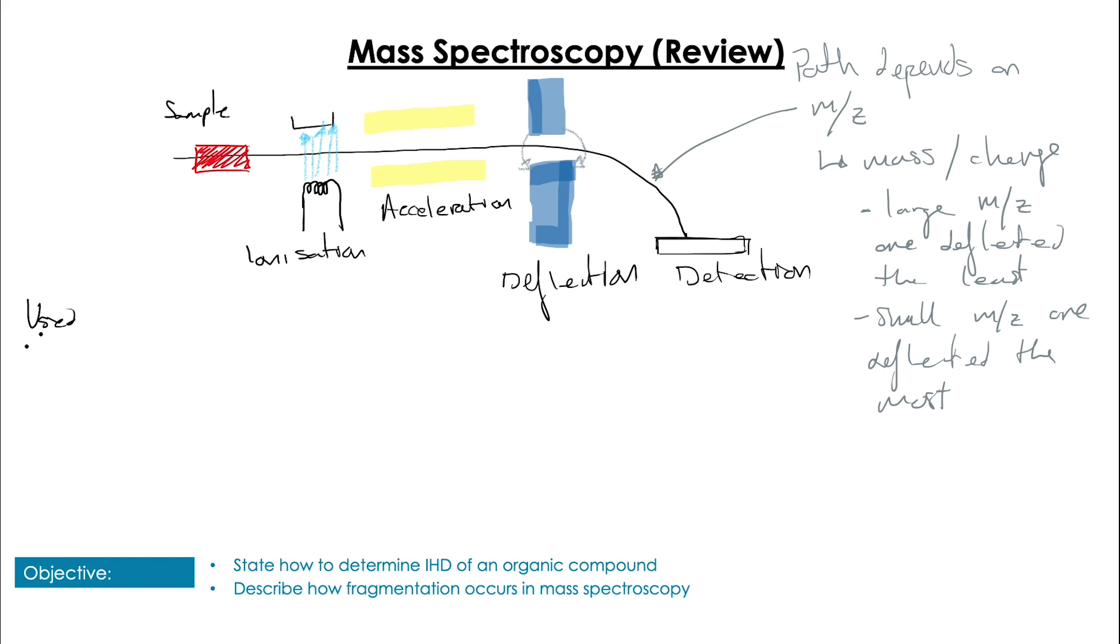This is because a large m/z value will not be deflected as much as one with a small m/z value. So as we looked at in unit 2, this can be used to determine the relative isotopic abundance of elements. However, it can also be used to characterize the structures of new compounds, and this utilizes something that happens in the ionization stage called fragmentation.